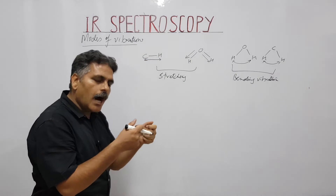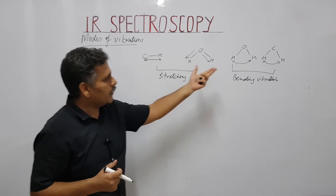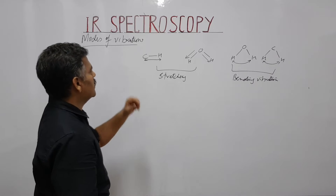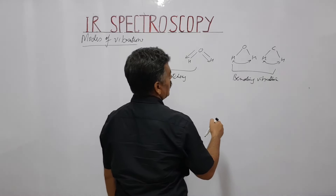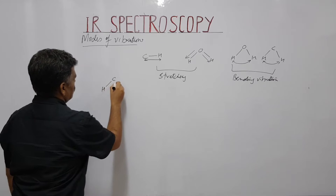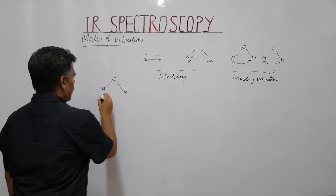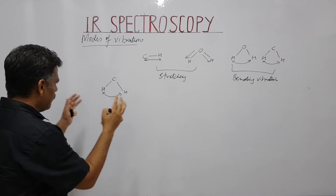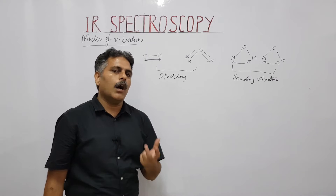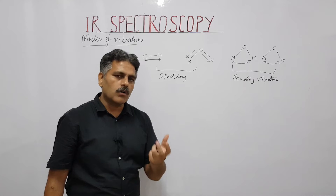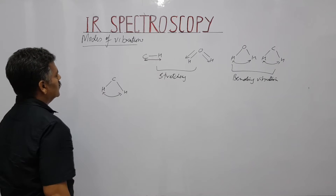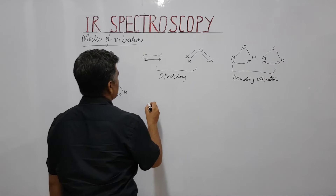It takes more energy to stretch a bond compared to bending it. For bending vibrations, there are different types depending on whether the motion occurs in the plane or out of the plane of the molecule. Based on the bending of atoms in-plane and out-of-plane, we get different types of bending vibrations.